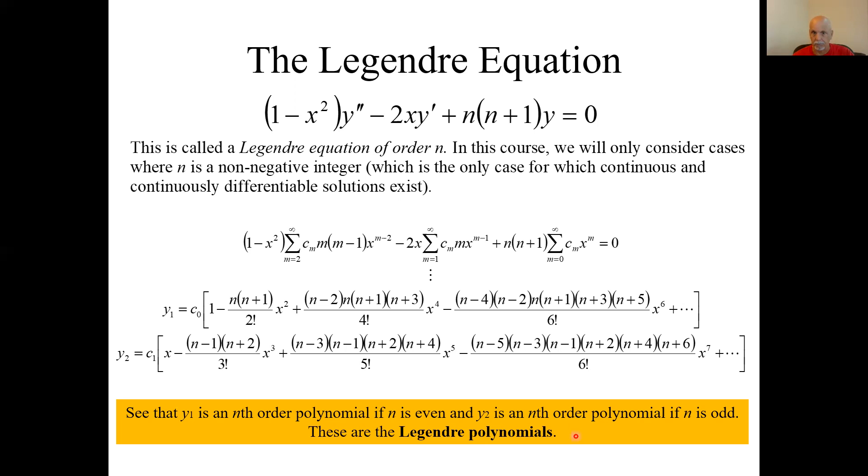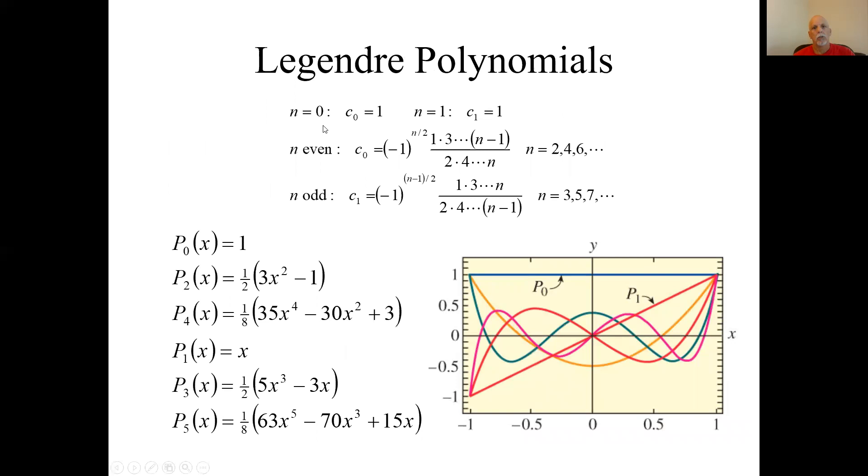There's a way to come up with, usually we just pick c sub zero and c sub one to be zero or one. If you're a little bit more clever in this case, it simplifies things a bit. In fact, these are the standard ways to pick the c₀'s and the c₁'s for the two cases where n is either even or odd.